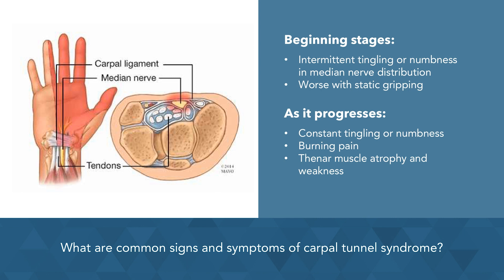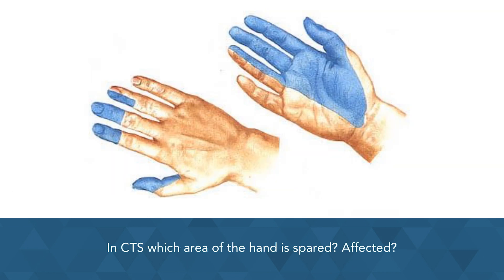As it continues to progress, we'll see the thenar muscles atrophy and weakness develop. Looking at the affected areas of the hand, the lateral palmar surface, the sides of the first three digits, the lateral half of the fourth digit, and the dorsum of the distal halves of these digits are all affected.